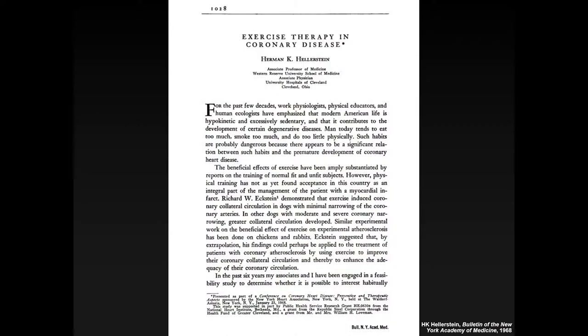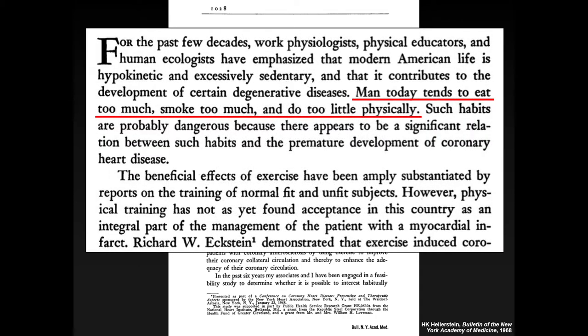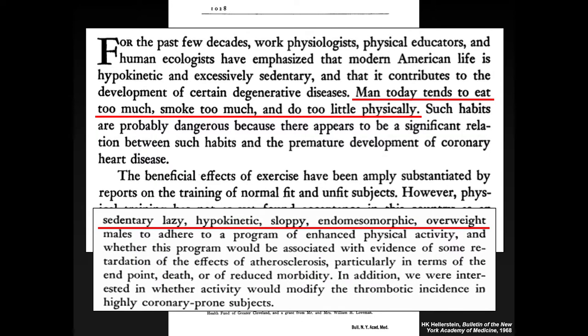Looking at excerpts from the formally published 1968 paper, Hellerstein writes: 'Man today tends to eat too much, smoke too much, and do too little physically.' Not a very inclusive statement by modern standards. He goes on to describe study individuals as 'sedentary, lazy, hypokinetic, sloppy, endomesomorphic, and overweight.' Endomesomorphic means having a round shape — a person with extreme endomesomorphy being 'as close to globular as possible.' You don't get that kind of eloquence in scientific papers today.